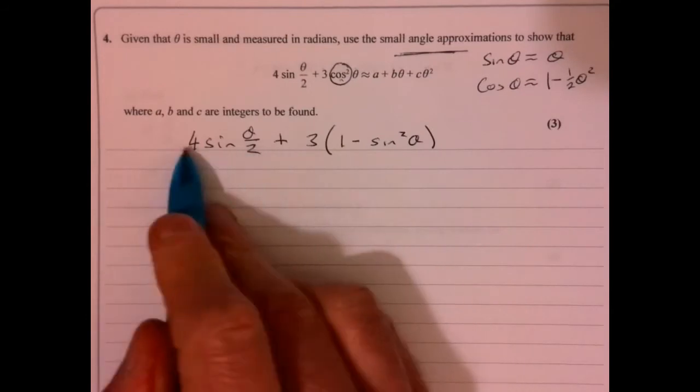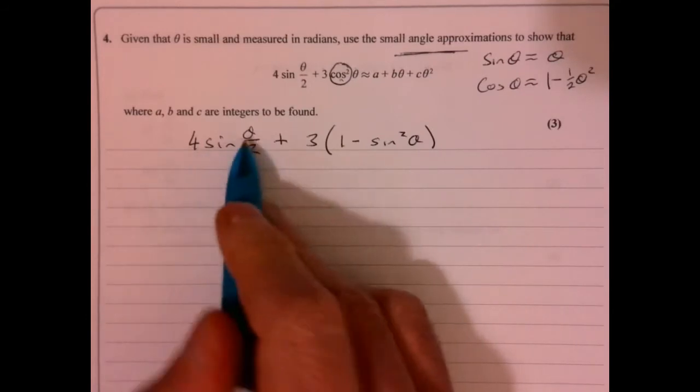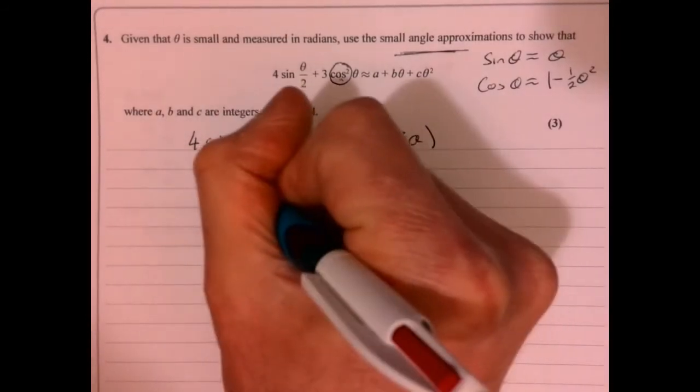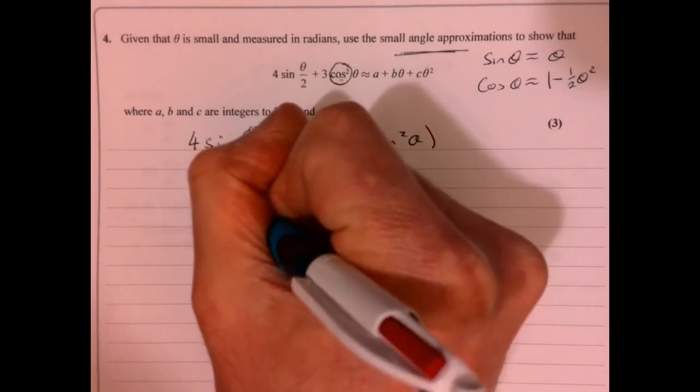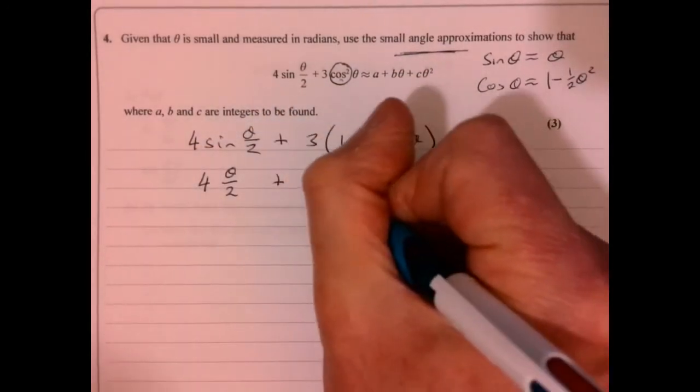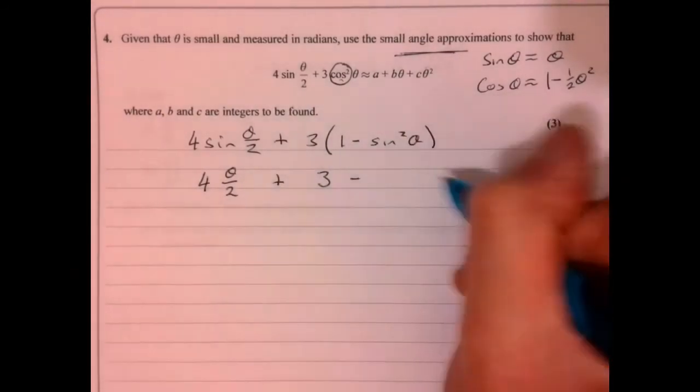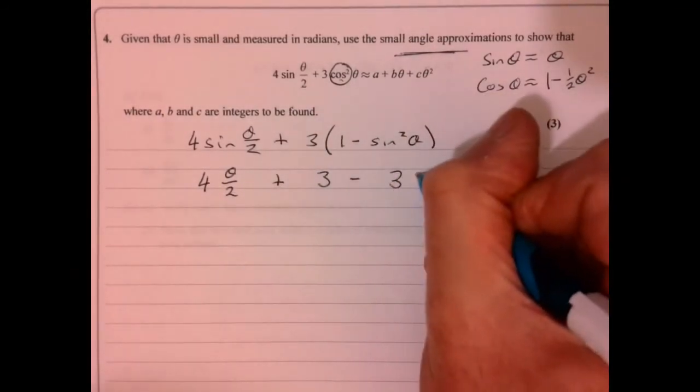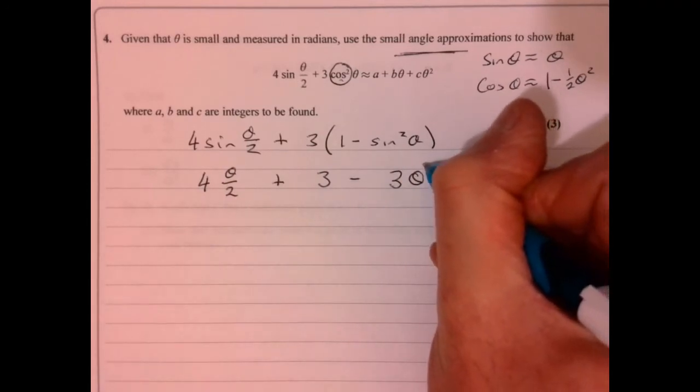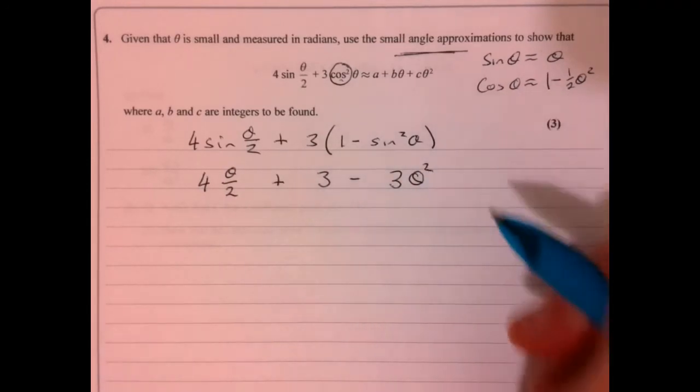So let's have a look and see what this is going to give us here. So this is the same as four, that's going to be theta over two plus three. And then that's take away three theta, that's going to be squared.